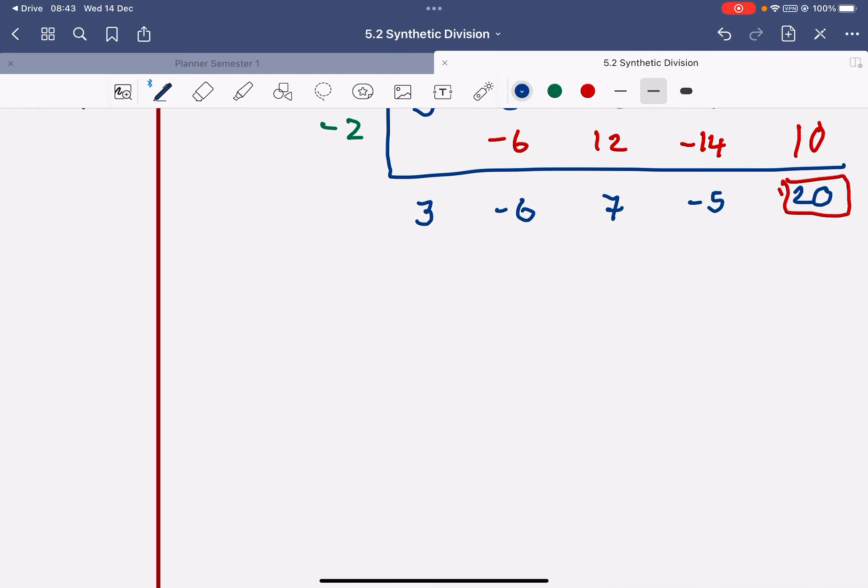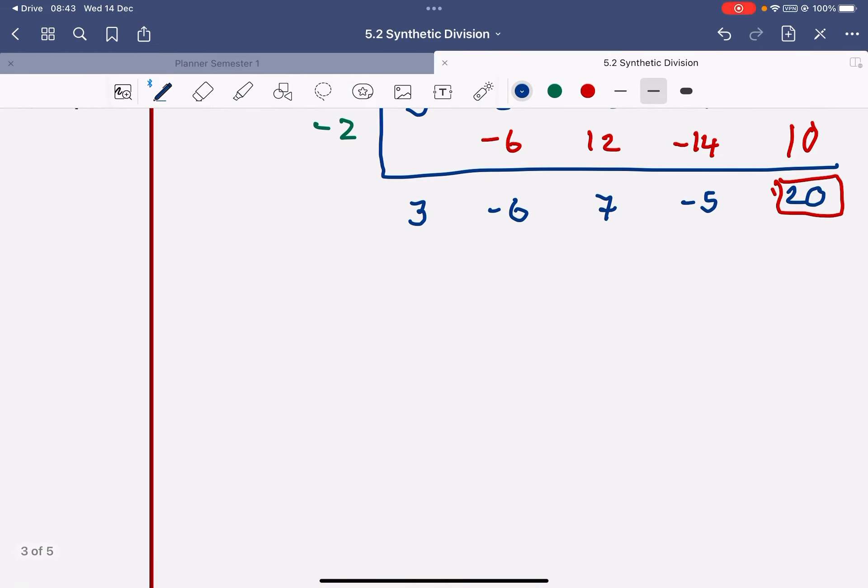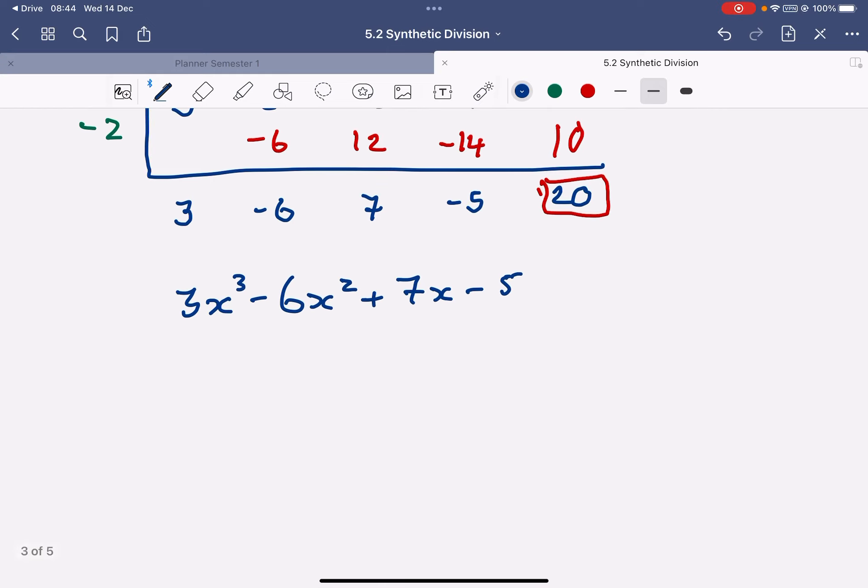The rest of the terms tell me the coefficient. So because I started with x to the power of 4, I know that I'm going to start off with 3x to the power of 3, take away 6x squared. So this is what's left after my division. Plus 7x minus 5 plus the remainder. I was divided by x plus 2.